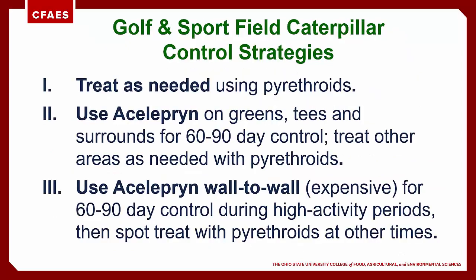There are several approaches that golf course and sport field managers can use to control turf infesting caterpillars. The simplest is to treat turf when and where caterpillars are detected, using pyrethroids as the primary insecticide. A better approach, especially for protecting golf course greens and tees, is to apply aceleprin at moderate to high rates, ensuring you also treat one to two boom widths around the greens and tee surfaces to eliminate any armyworms or cutworms that could crawl back onto surfaces at night. Higher-cut turf can be treated as needed with less expensive pyrethroids. For turf managers with big budgets, using aceleprin wall-to-wall can eliminate caterpillar issues for several months and also help eliminate billbug and white grub issues.